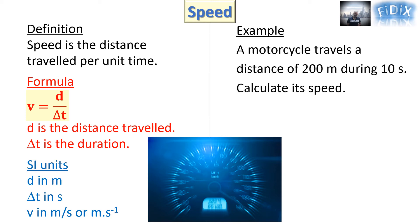Example: a motorcycle travels a distance of 200 meters during 10 seconds. Calculate its speed.